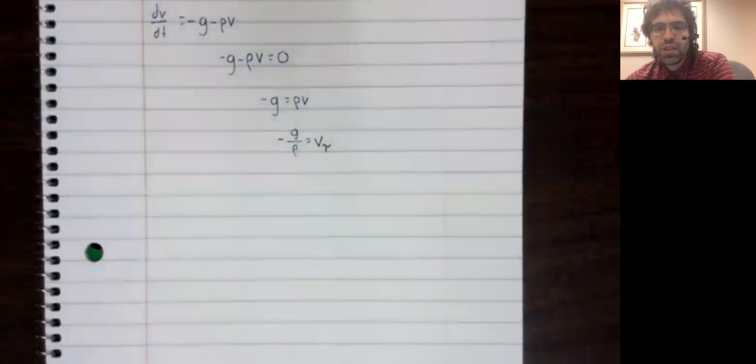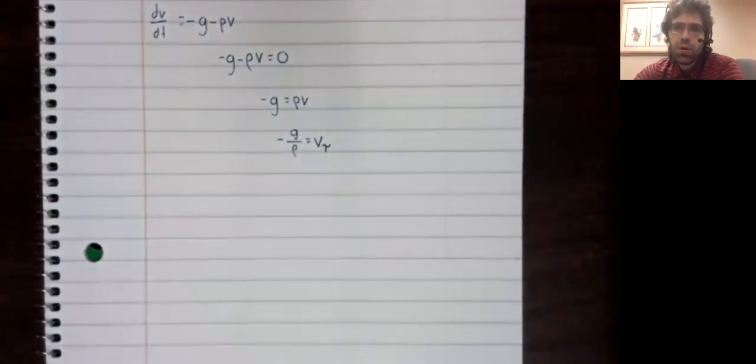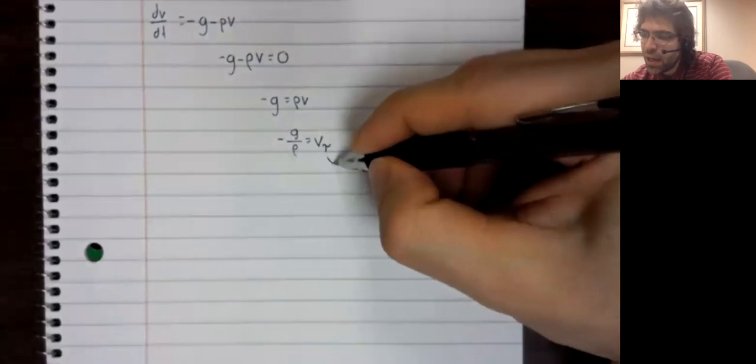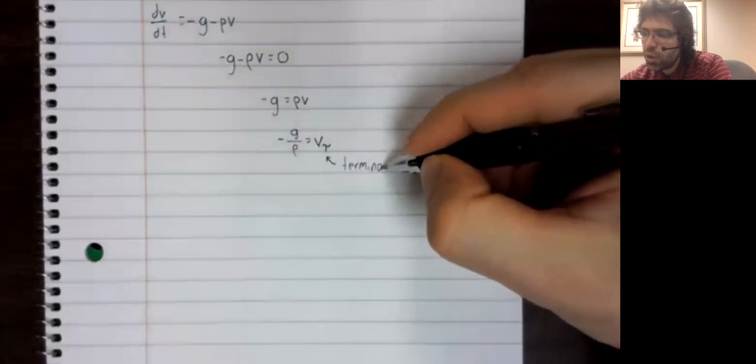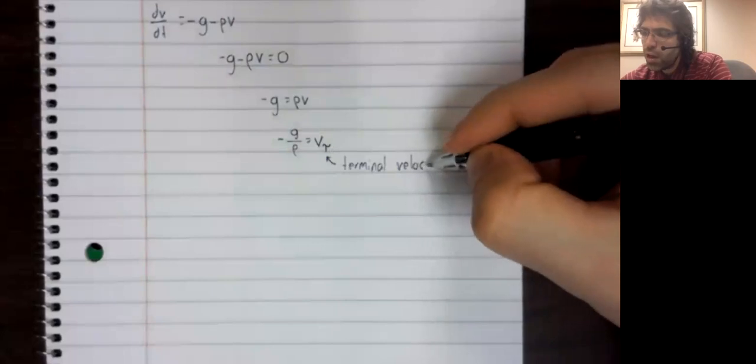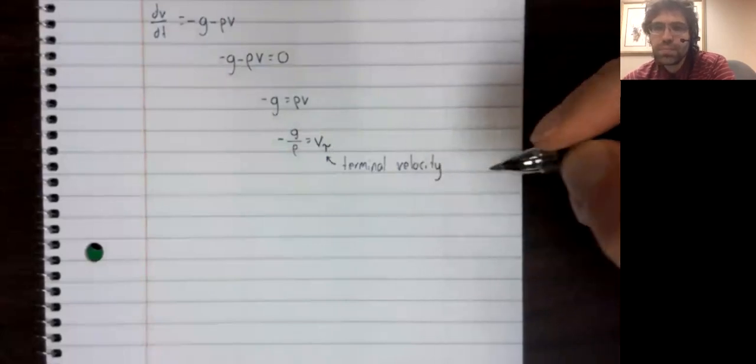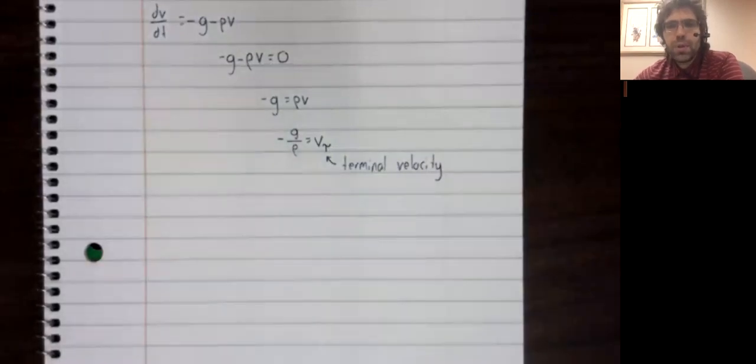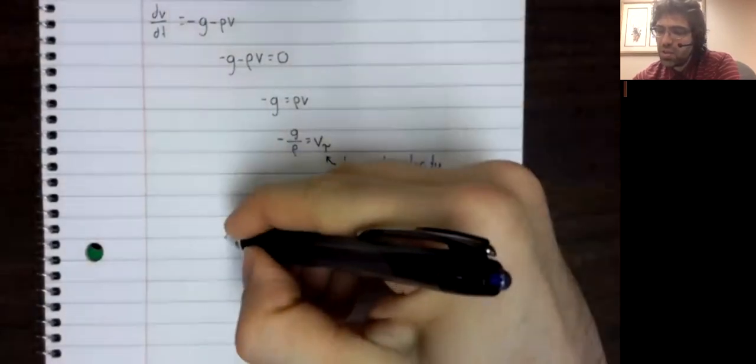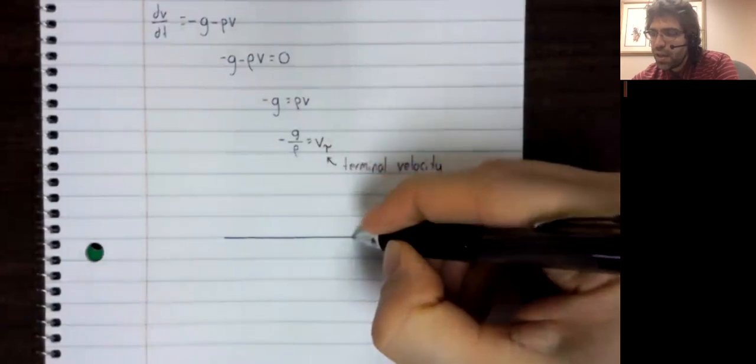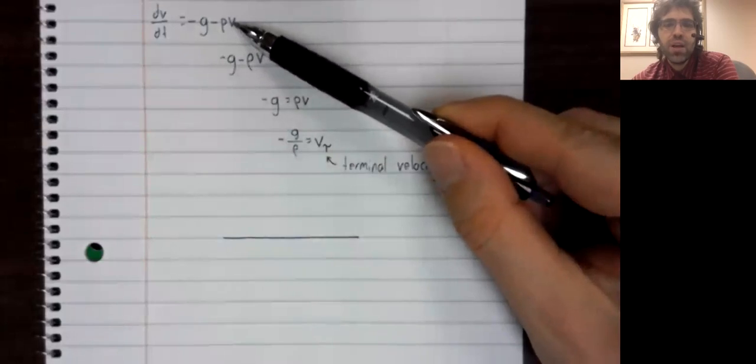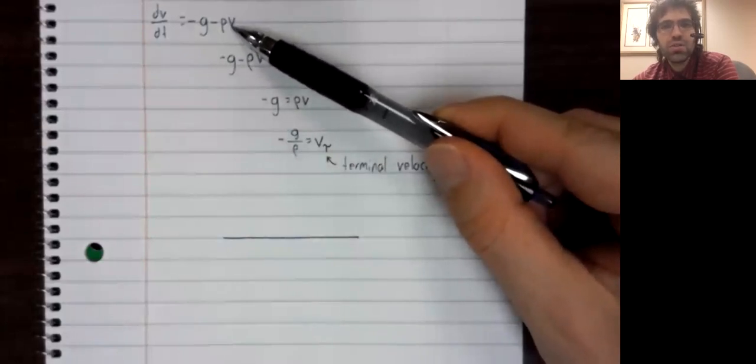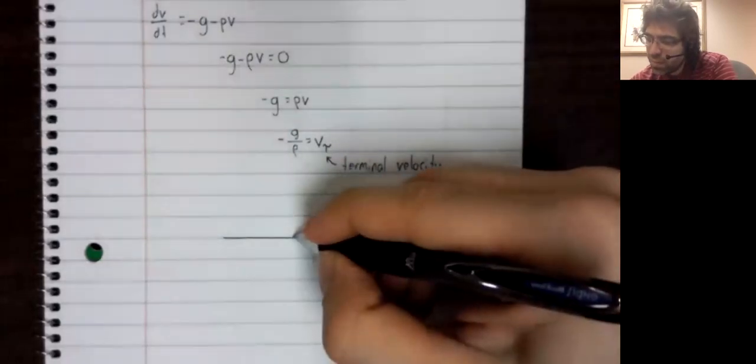We'll give this value a name, we'll call it V sub tau and say that it is terminal velocity. And we will now analyze the stability of this fixed point. And therefore learn something about this V without ever actually solving for V.